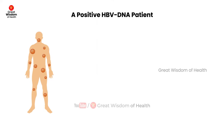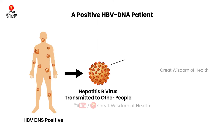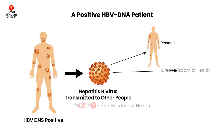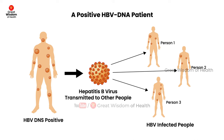A positive HBV DNA level is greater than 115 copies of the virus per milliliter, or greater than 20 IU per milliliter. This indicates that the virus is multiplying in the patient's body and the person is contagious.